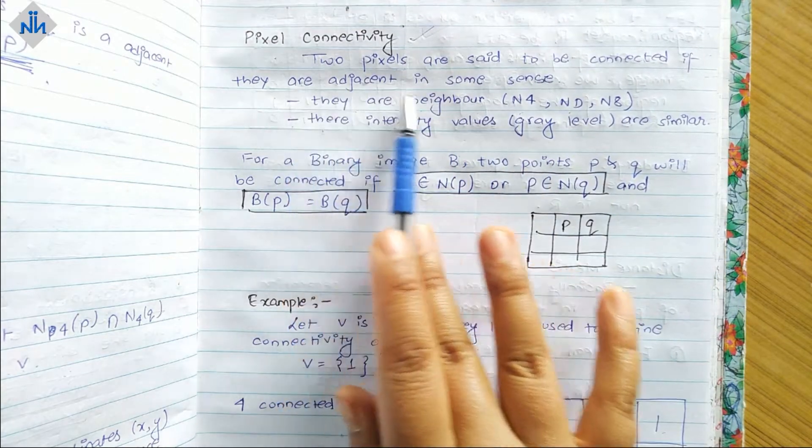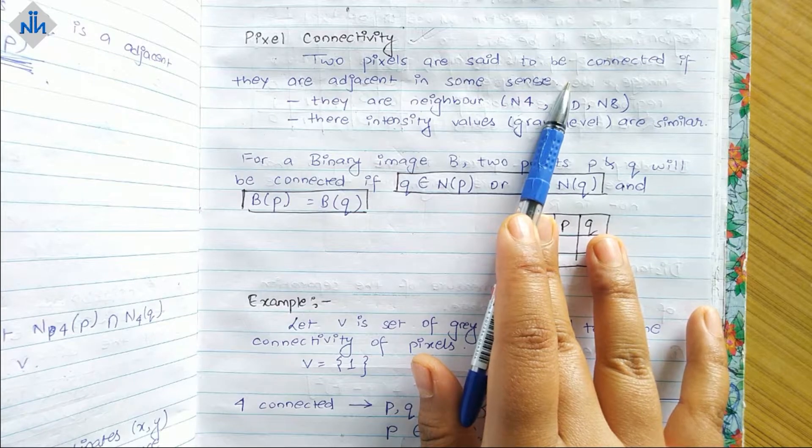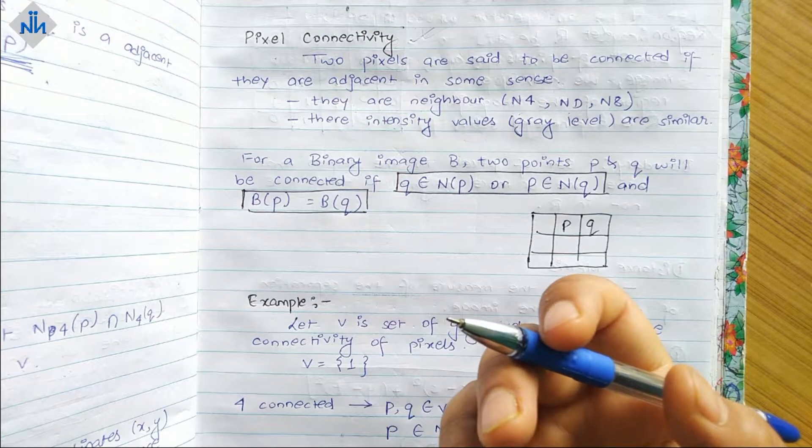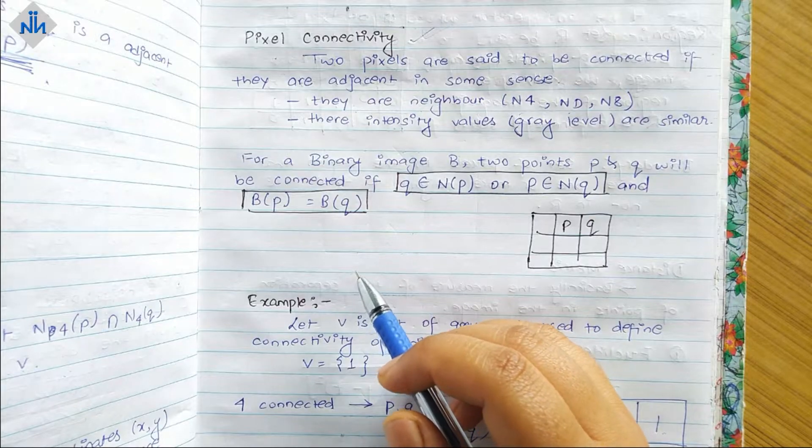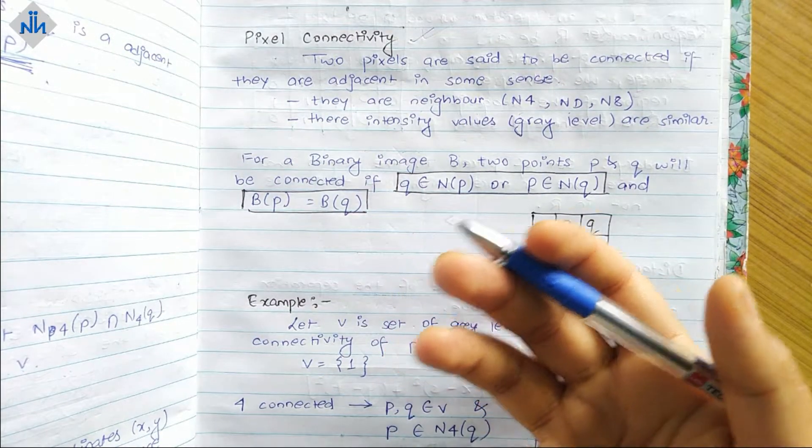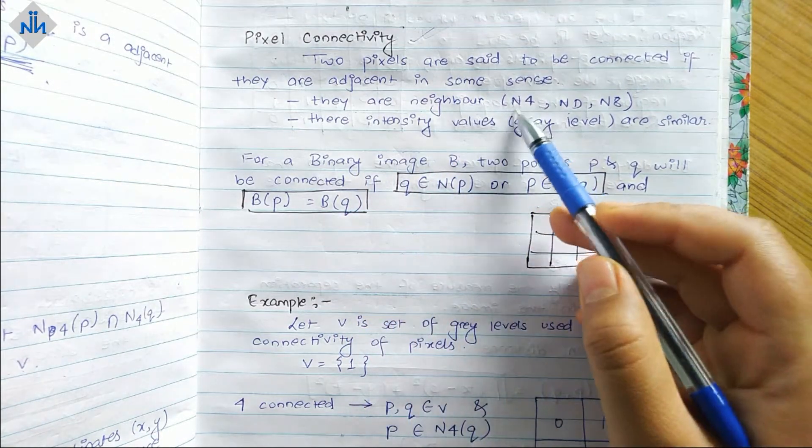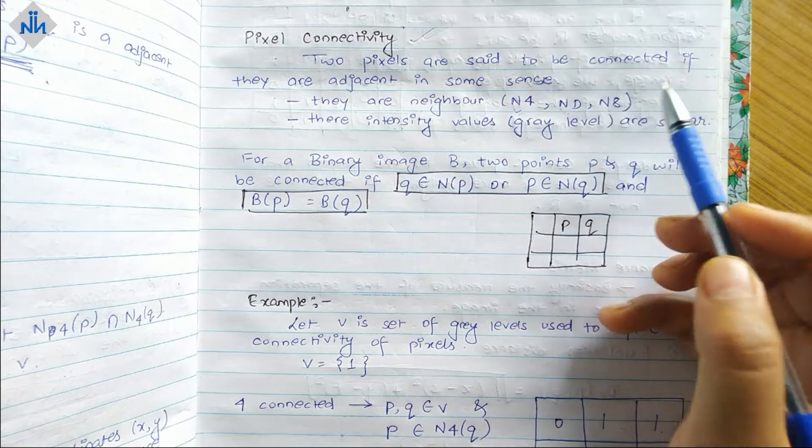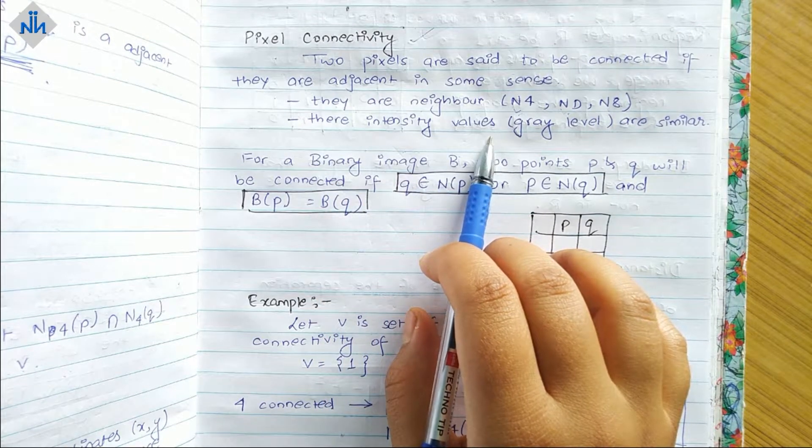That means by looking at it we might come to a conclusion that they have some relationship between them, then they can be called as connected. So there are two conditions that two pixels must follow to be known as connected. They should be neighbors - it can be N4 neighbor, diagonal neighbor, or N8 neighbor. And their intensity values, that are the gray level values, must be similar.